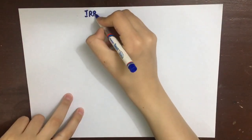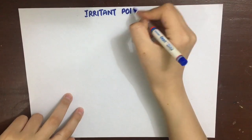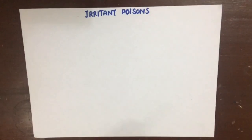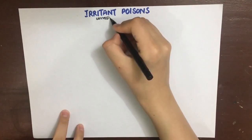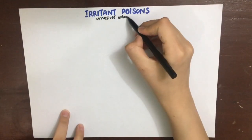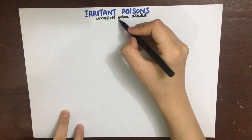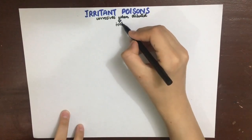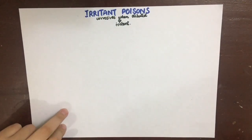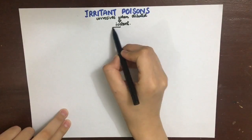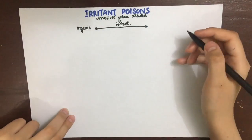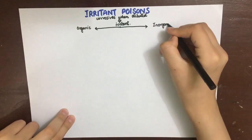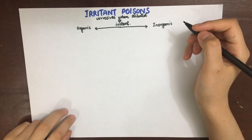In the next two videos, we'll be looking at irritant poisons, specifically the non-metallic poisons. First, I wanted to classify the irritant poisons. Irritant poisons resemble corrosives when corrosives are diluted. They mainly cause gastroenteritis and depressant effects.